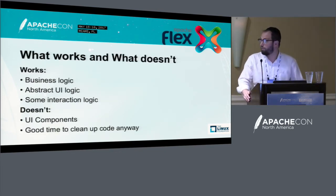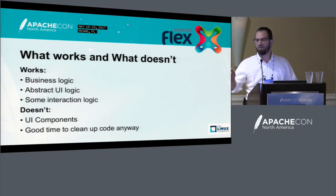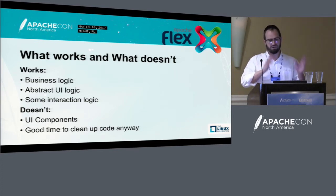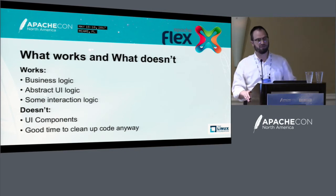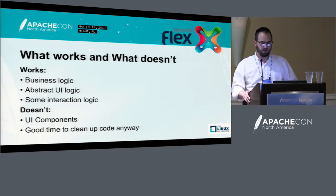So what works and what doesn't? What should you try to migrate as-is? Business logic, basically — you can just bring it in 100%. Take your logic, copy it over, and 99% of the time it just works. Abstract UI logic — pieces that are connected to each other but not specific to how components are implemented — that stuff generally migrates pretty well also. There are differences in the components and the way components are composed, built, and connected to each other, but in places where it's similar you can copy that logic over.